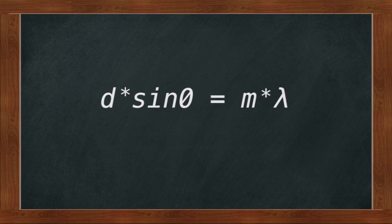We will be using the equation d times sine theta equals m times lambda. In this equation, lambda represents the wavelength of light, which is the quantity we are interested in finding, and its value depends on the particular color of light.